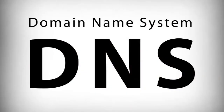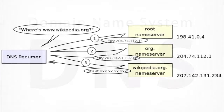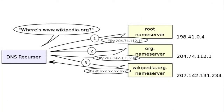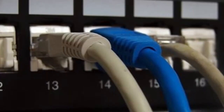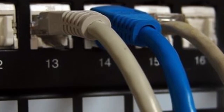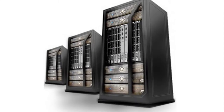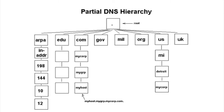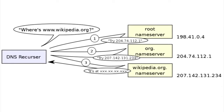How does the domain name system work? DNS is a distributed database which keeps track of computer names and their corresponding IP addresses on the Internet. Many computers connected to the Internet host part of the DNS database and the software that allows others to access it — these computers are known as DNS servers. A DNS server only contains a subset of all the addresses, and if one does not contain the domain name requested, it will redirect the requesting computer to another DNS server.